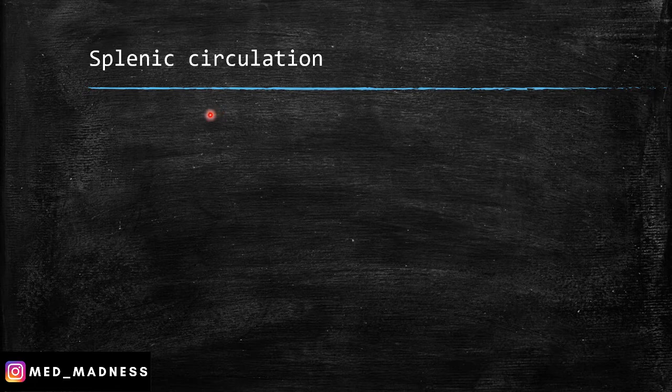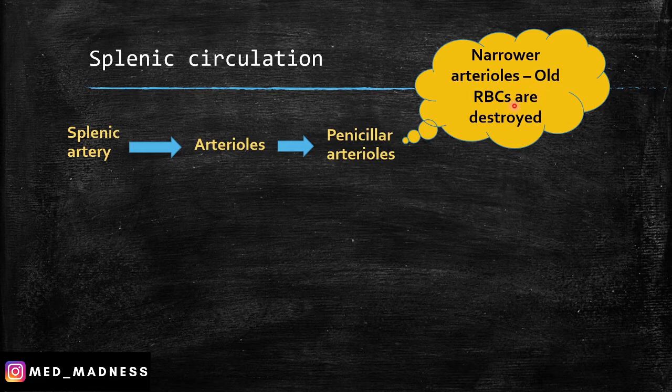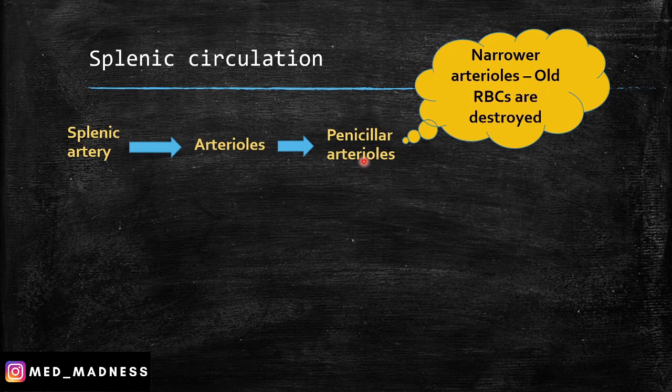Let's discuss about the splenic circulation. Blood from the splenic artery passes through the arterioles and from the arterioles passes through the penicillar arterioles. Note that the penicillar arteriole is very narrow. These narrower arterioles are responsible for destroying the old RBCs, because the old RBC membrane is very fragile and cannot pass through the narrower arterioles, so it gets destroyed.